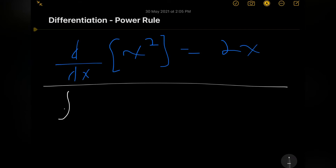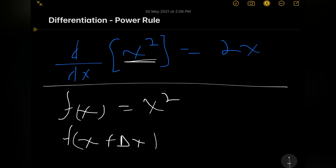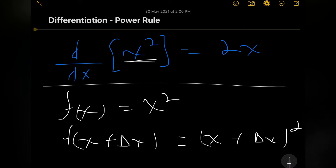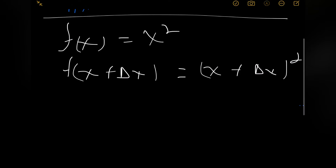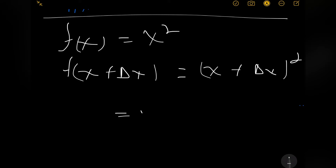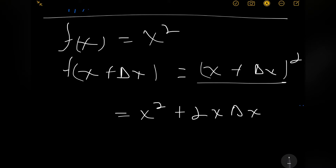Remember from first principles, the first thing we do is to identify our function. Our function is x squared. Our next step is to add a small change to x. So f of x plus delta x is equal to x plus delta x, all squared. From binomial expansion, we know that this is equal to x squared plus 2x delta x plus delta x squared.